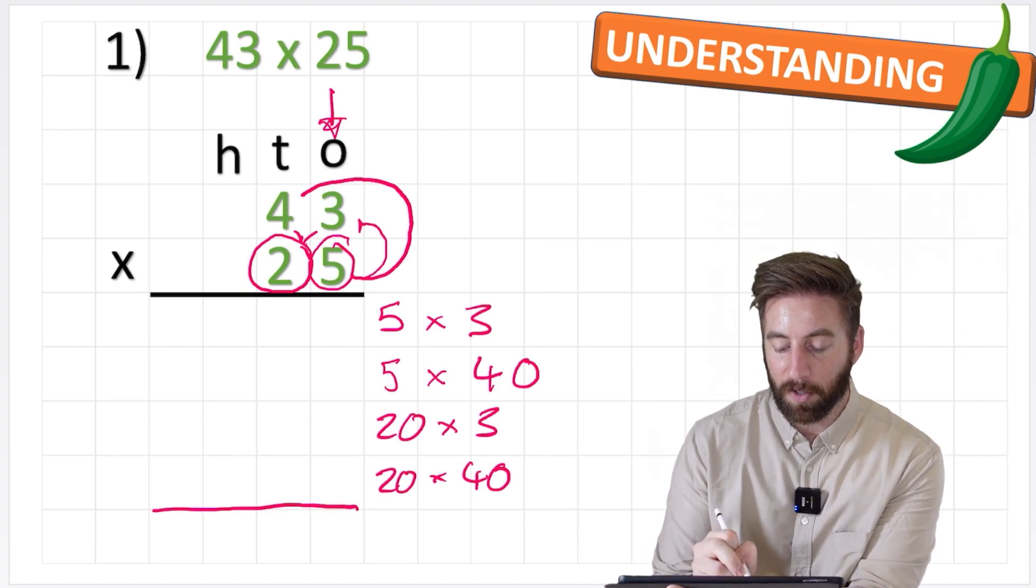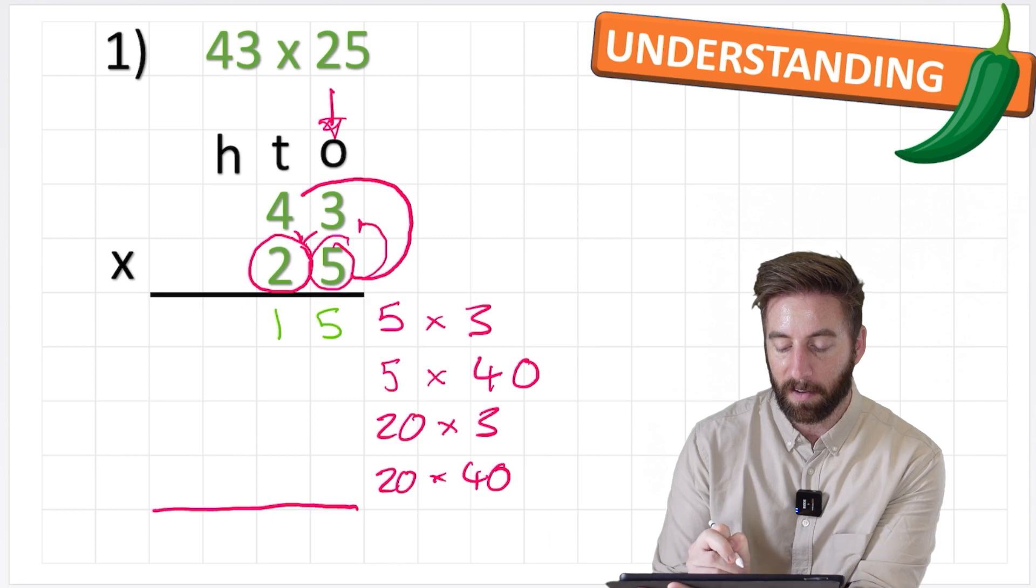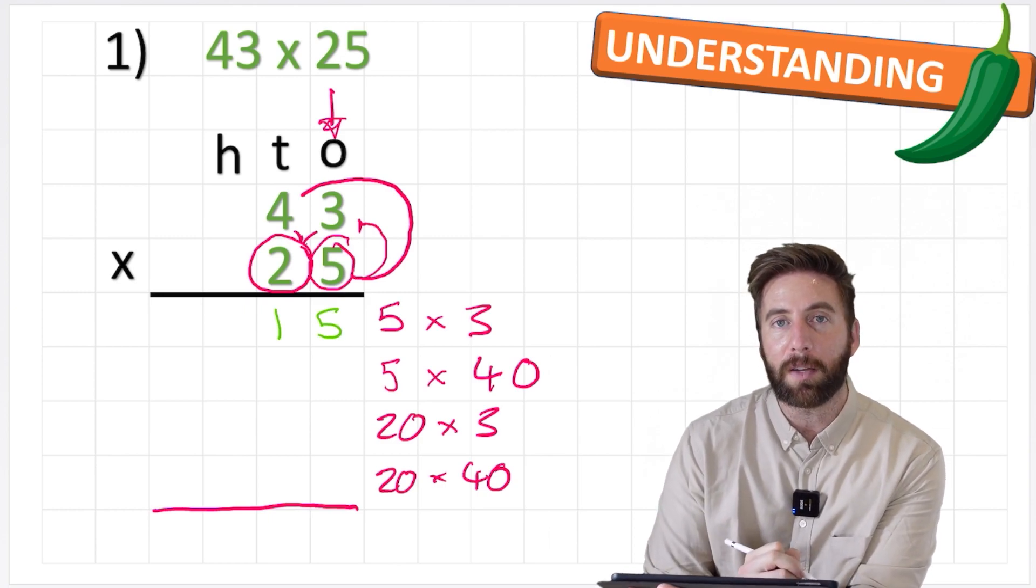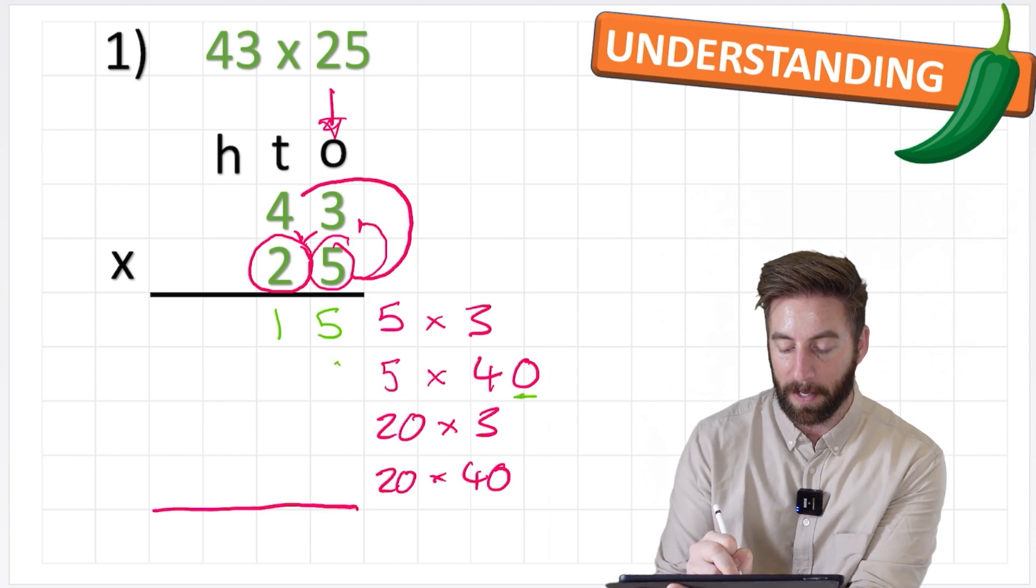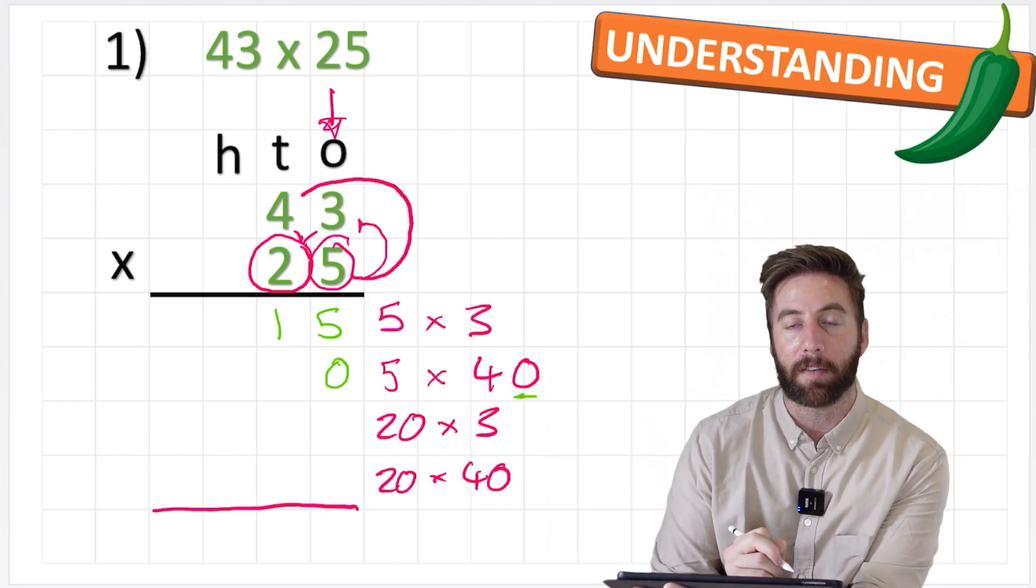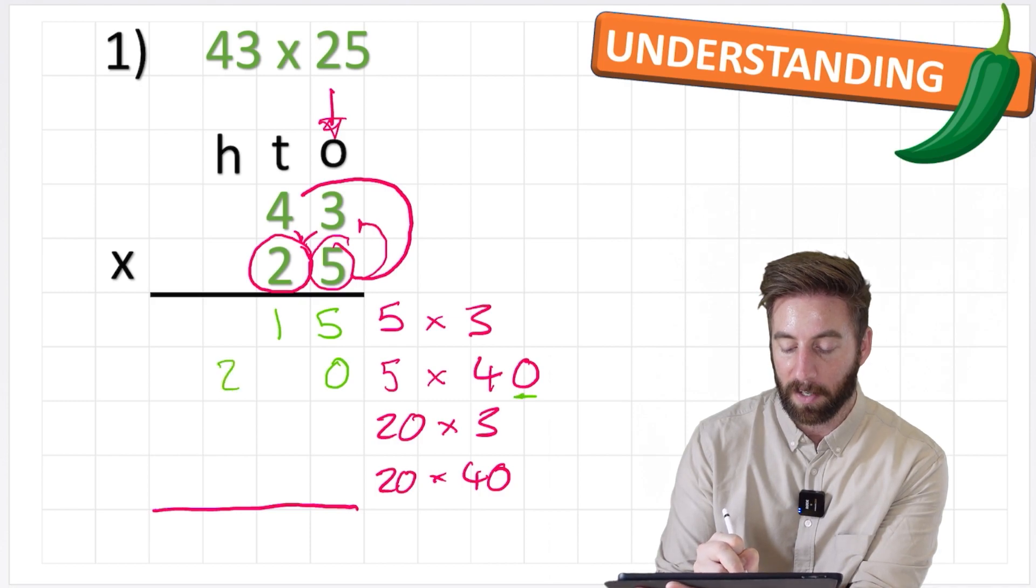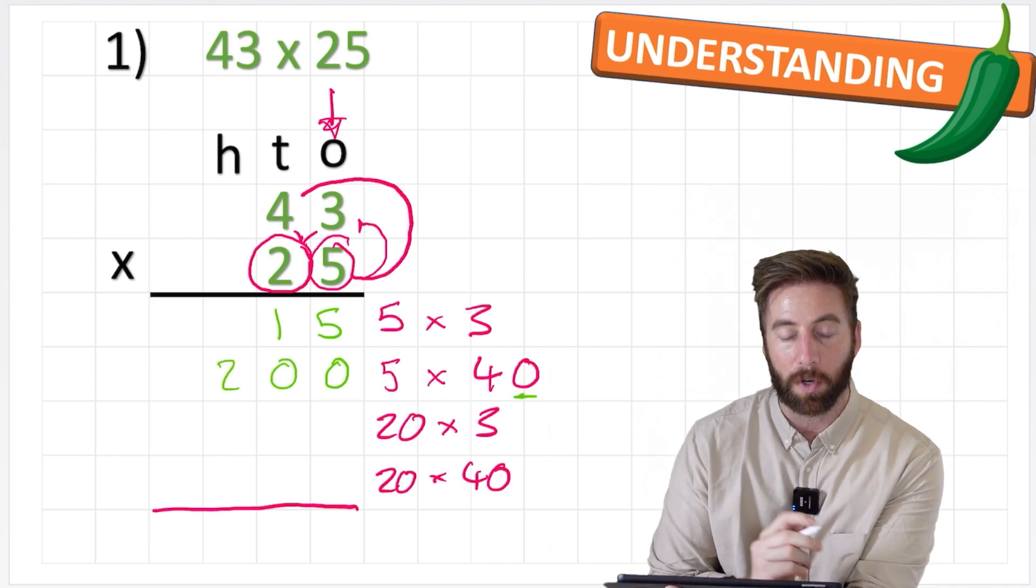So here goes. 5 times 3 is 15. 5 times 40, well I might not know that so I can just use my knowledge of place value and put my 0 in place and then just do 5 times 4. 5 times 4 is 20. So the answer to 5 times 40 would have been 200.